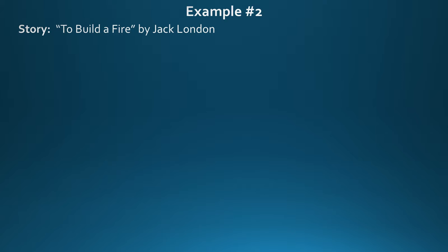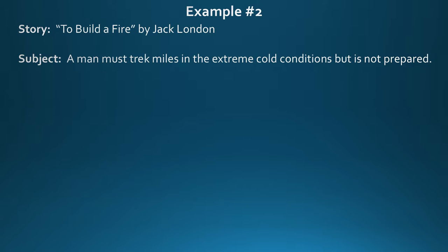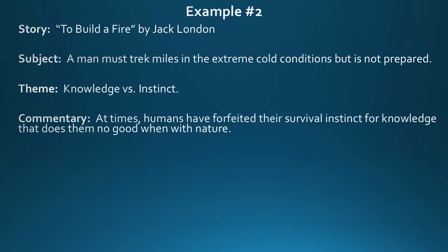Example number two comes from To Build a Fire by Jack London. A man must trek miles in extreme cold conditions but is not prepared — that is the subject, confronting the environment when not prepared. The theme, or one of the themes, is knowledge versus instinct. The commentary I would say around this is that at times humans have forfeited their survival instinct for knowledge that does them no good when with nature. This is one of the themes that Jack London is tapping into — the idea that humans have all this knowledge and proper learning, but at times it displaces us when we are with nature.